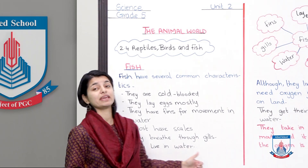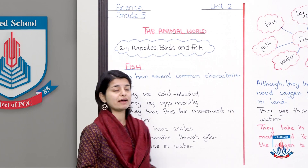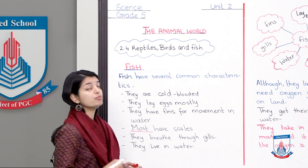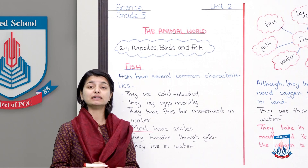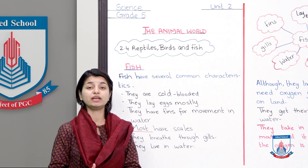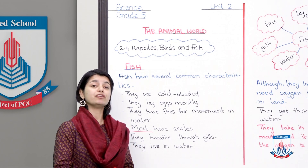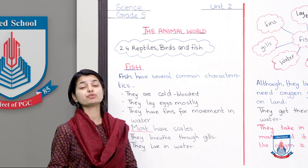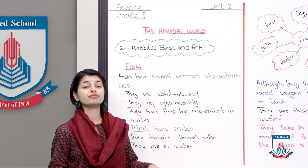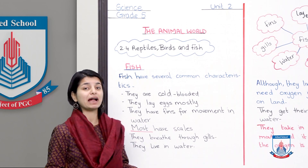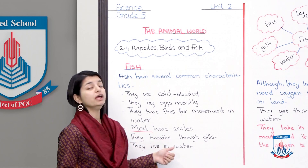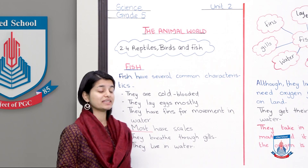After that, most fish have scales — though again, most is the key word, as there are some exceptions without scales. There are many similarities between fish and reptiles: they are both cold-blooded, both lay eggs, and both have scales.